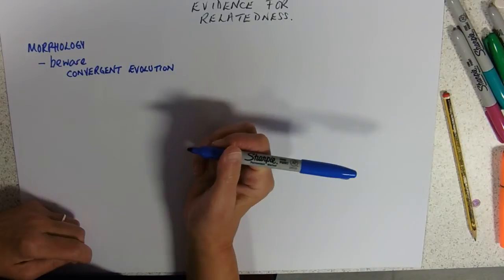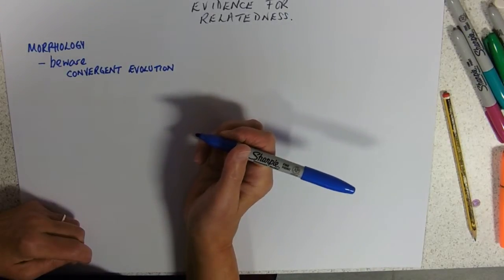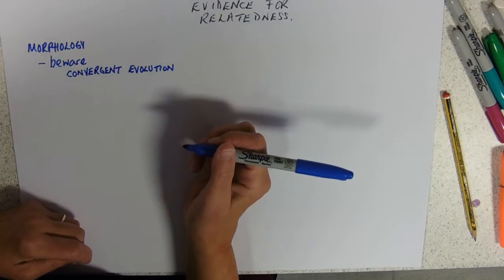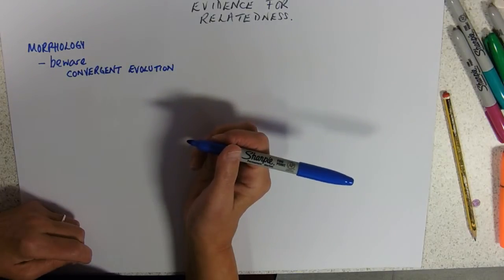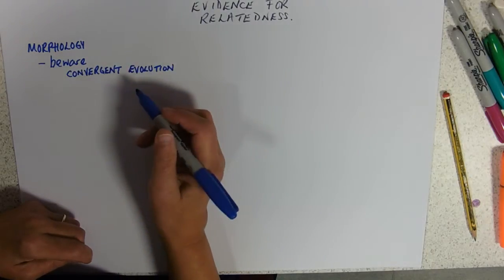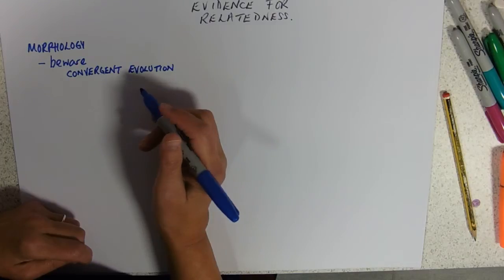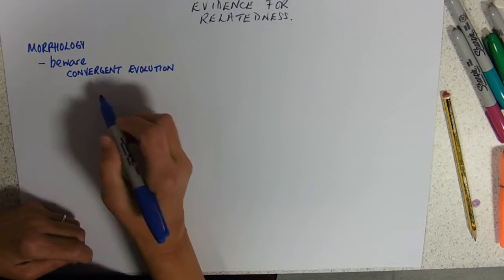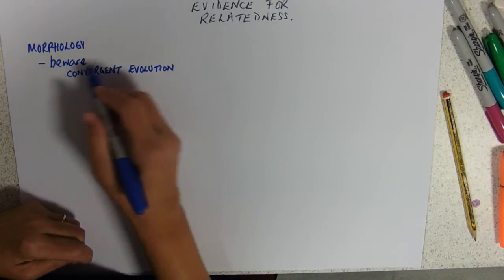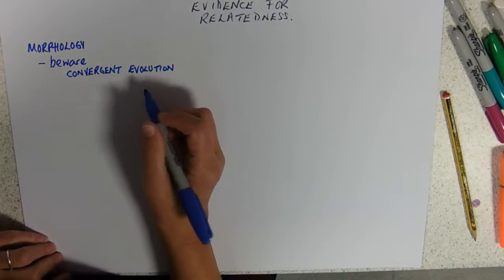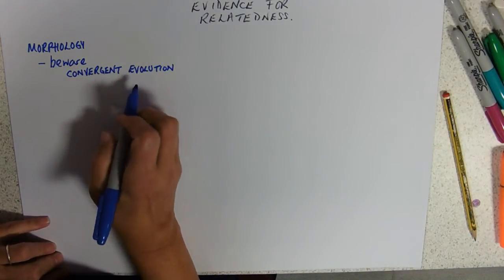So if you look at an echidna, spiny echidna, porcupine and hedgehog, they all pretty much look small and have spines and they've got fur and they're all mammals. But the spines are a protective thing. So they've kind of evolved, if you like, independently. So the same problem being solved of having spines for protection. So that's called convergent evolution.